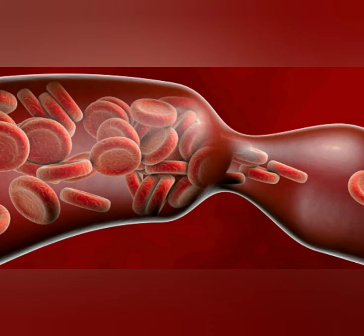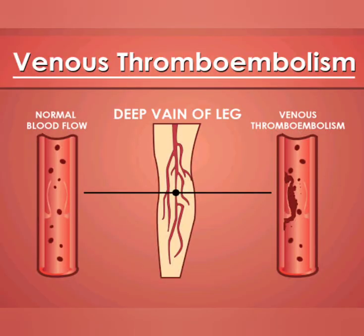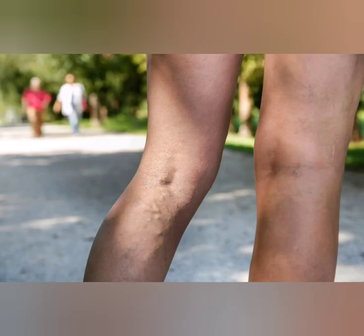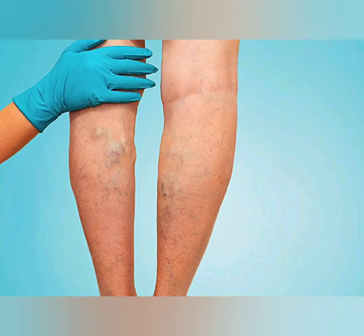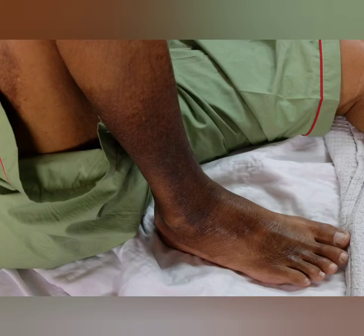Most of the time, the body gets rid of blood clots once the injury heals. However, sometimes these clots can cause problems. Blood clots in veins close to the skin are usually not serious. However, when blood clots form in deep veins over the legs, hips, pelvis, or rarely in the arms, neck, or chest, they can be dangerous.